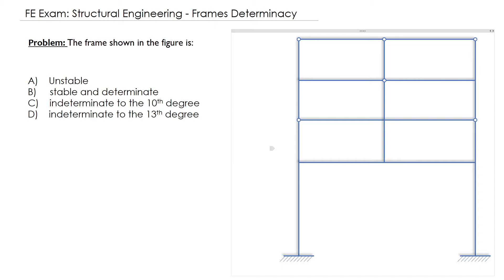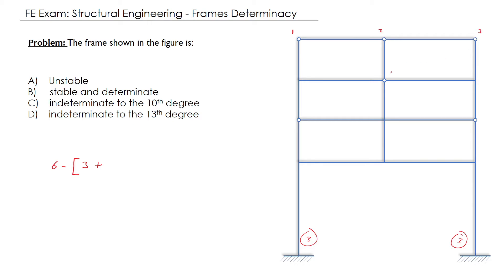Let's go to our example. We have three unknown reactions here and three unknown reactions here, so it's 6 minus the three basic equilibrium equations — forces in x, y, and moment. Let's name the hinges 1, 2, 3, 4, 5, and 6. Hinge 1 is attached to 2 members, giving 1 equation. Hinge 2 gives 1 equation. Hinge 3 gives 1 equation. Hinge 4 is attached to 4 members, giving 3 equations.